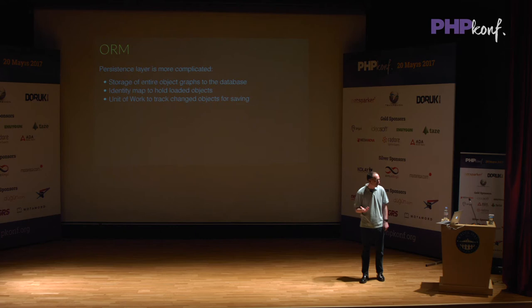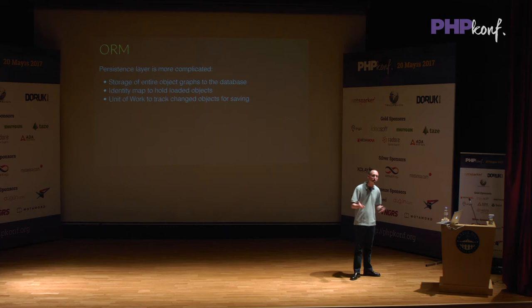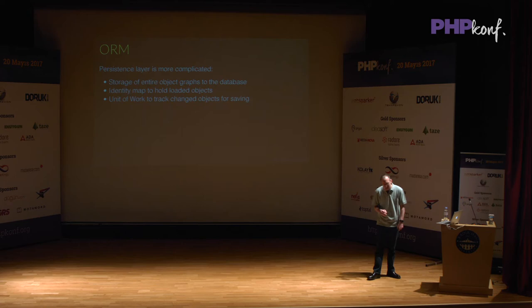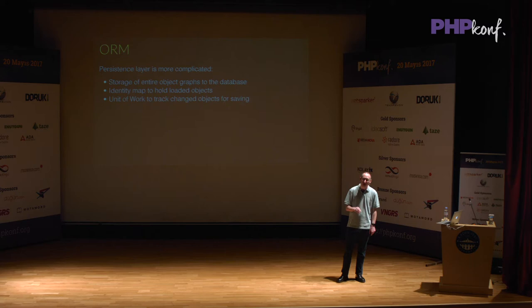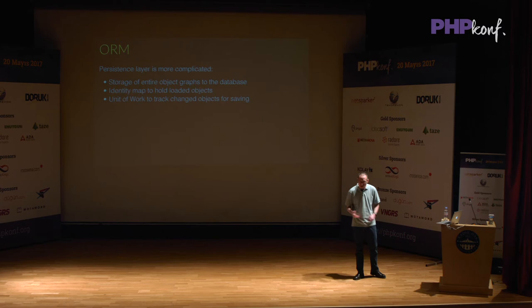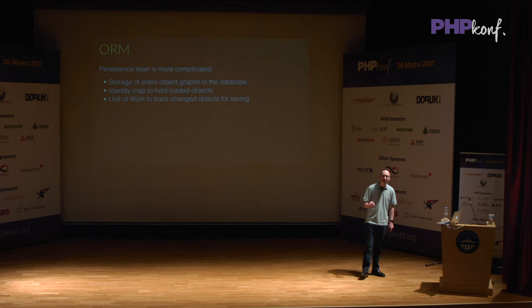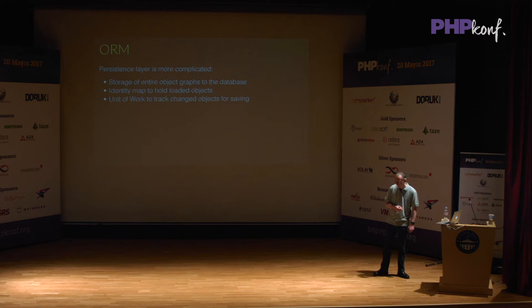The ORM persistence layer is more complicated — this is why you don't write it yourself. You get things like the unit of work design pattern, where the ORM knows which objects you've loaded and can then be saved again, so you don't have to manage any life cycles yourself. You hear criticism of Doctrine that it's quite bloated, but it's really really good at what it does. If you've loaded 50-60 objects out of a database, modified eight of them, and need to save just those eight back in the correct order so that foreign keys work — that's a hard problem. Doctrine is really good at that.